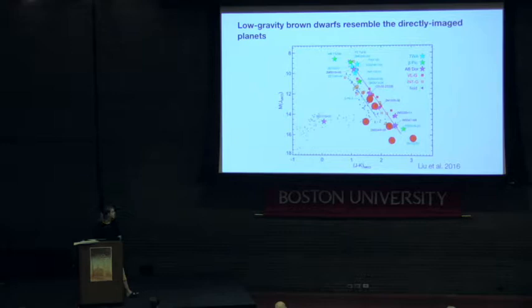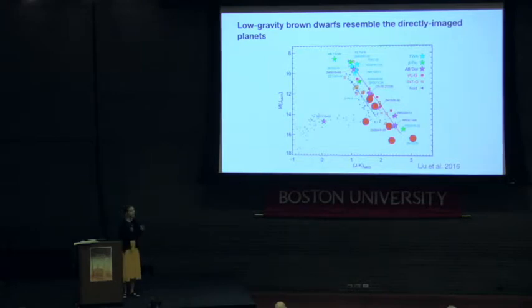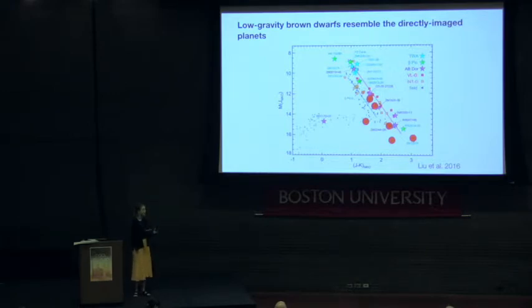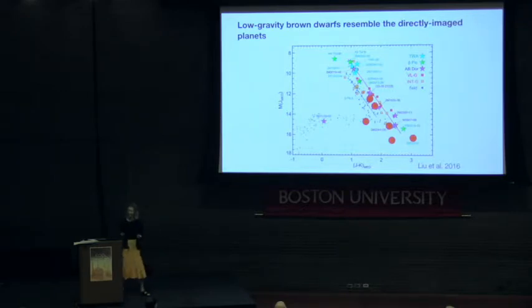If we plot a couple of the directly imaged planets and young companions over that, we see that these objects share a remarkable resemblance with the low gravity objects. So by studying these easy-to-observe, free-floating planetary mass objects, we can learn a lot about the directly imaged planets.